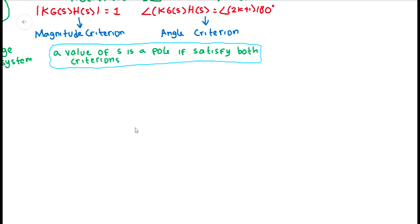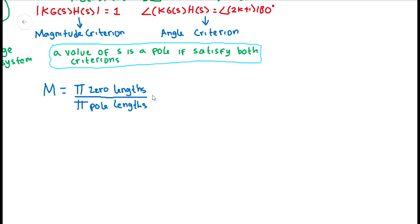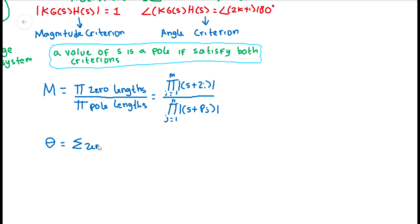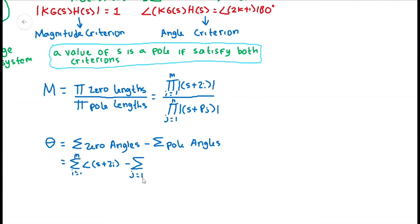These equations imply that if a value of S is substituted into the function K times G(S) and meets both criteria, the value of S is a system pole for a particular value of K. We can then determine the magnitude and angles of the roots of the system: the magnitude equals the product of zero lengths divided by the product of pole lengths, and the angle equals the sum of zero angles minus the sum of the pole angles.